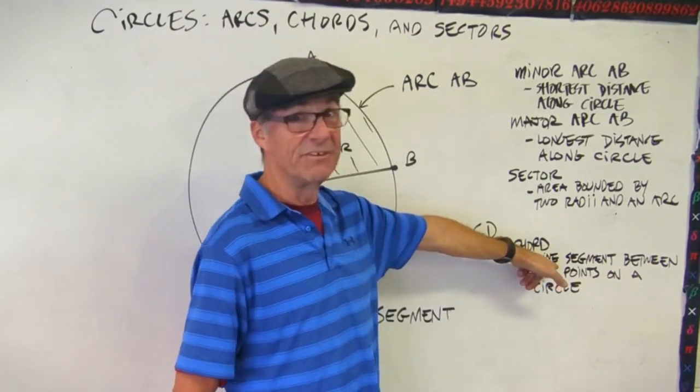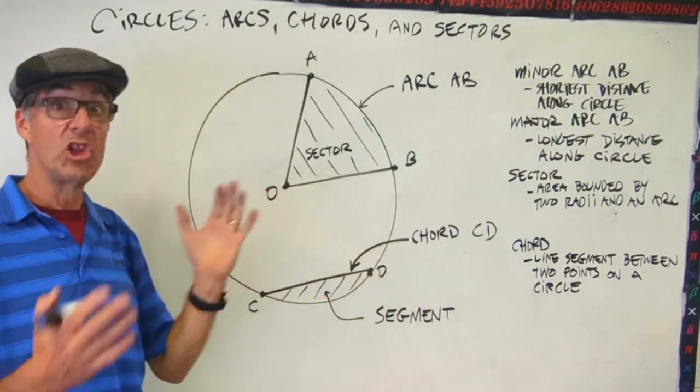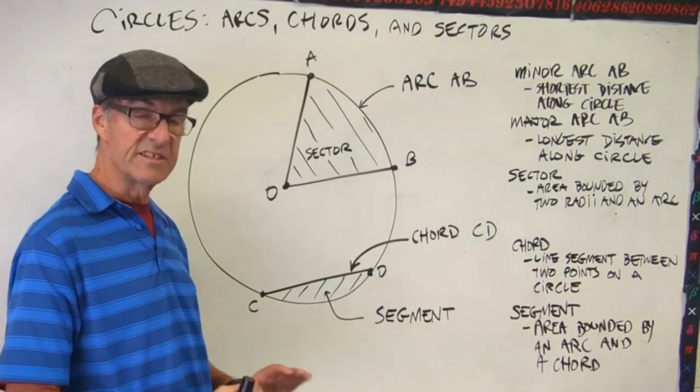The arc follows the surface of the circle, the curved line, the part of the circumference of the circle. The chord just cuts straight through. Notice how this is a line. Remember, a line is straight, that's linear. Whereas an arc is the shortest distance along the circle, so not a line.